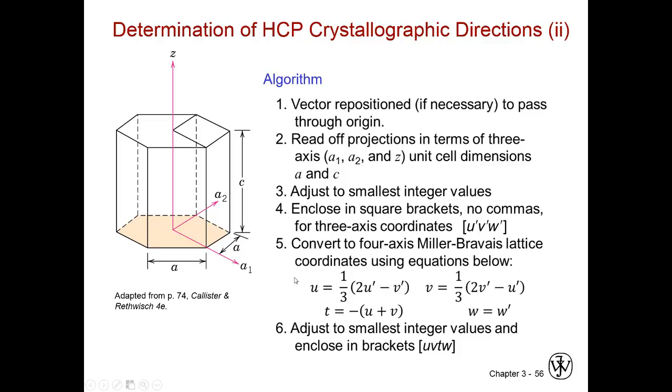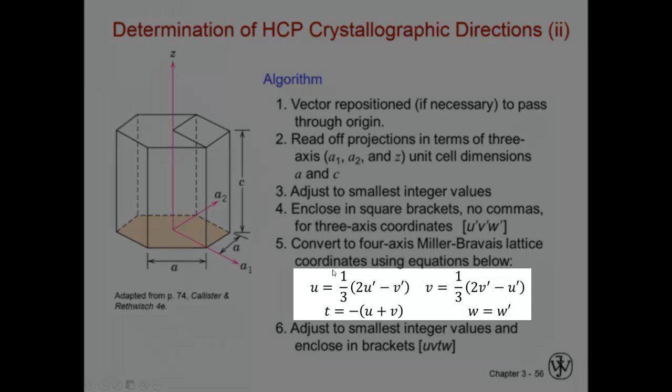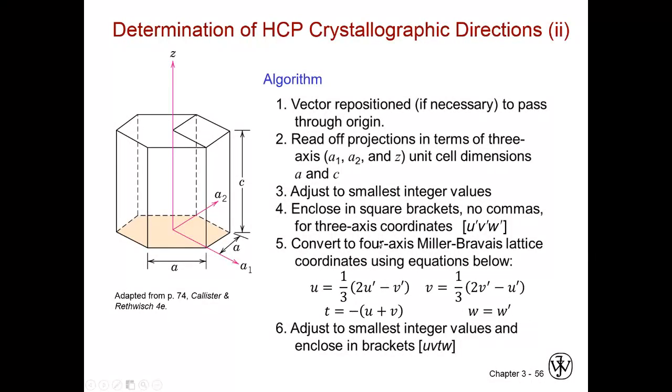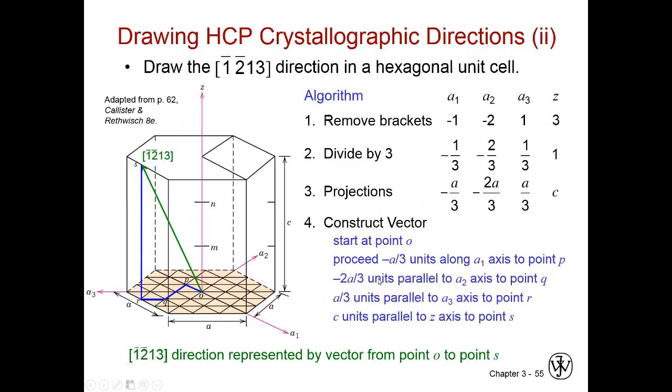Then we have to do a conversion using these formulas. Now be careful of these formulas because there's minus signs and primes and so on. So you have to be very careful with them. And then we adjust to the smallest integer values and enclose them in brackets to U, V, T, and W. Again, these are the U, V, T, W parameters right here.